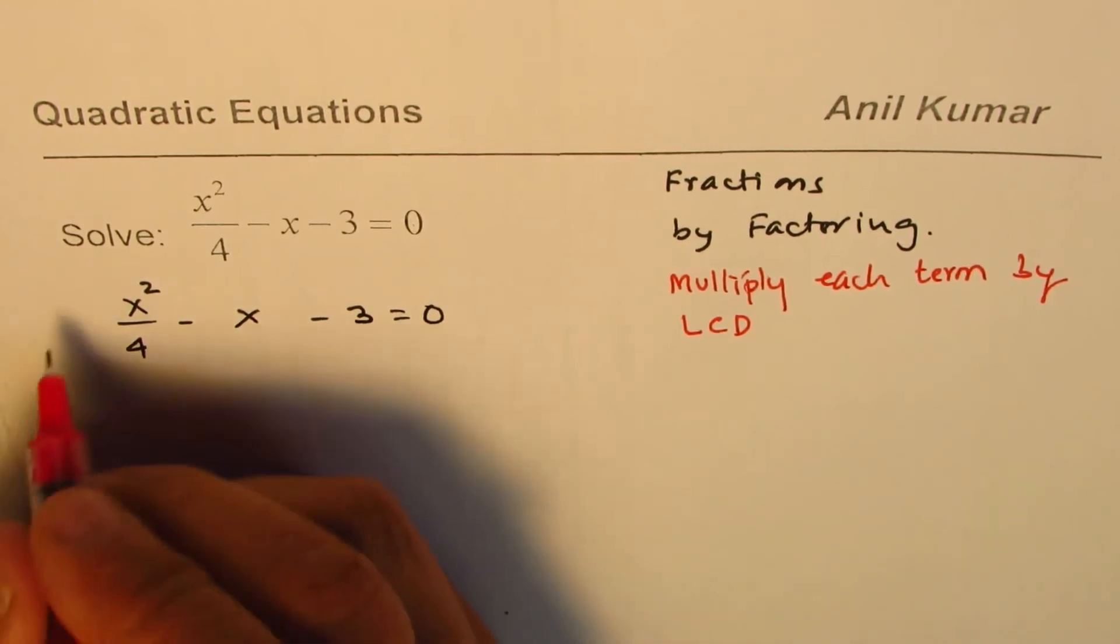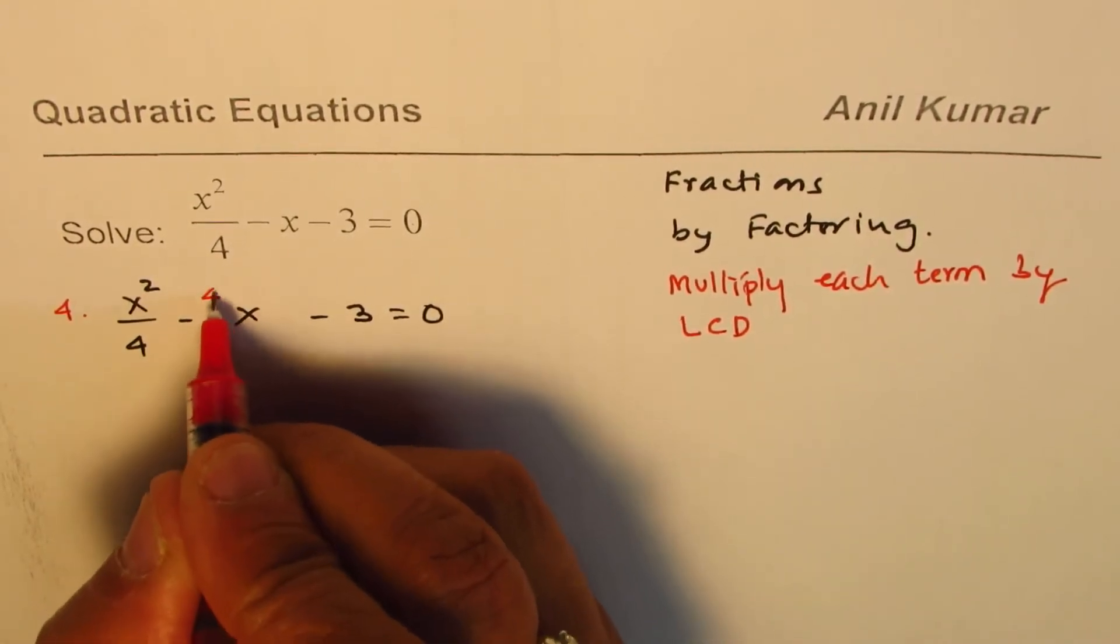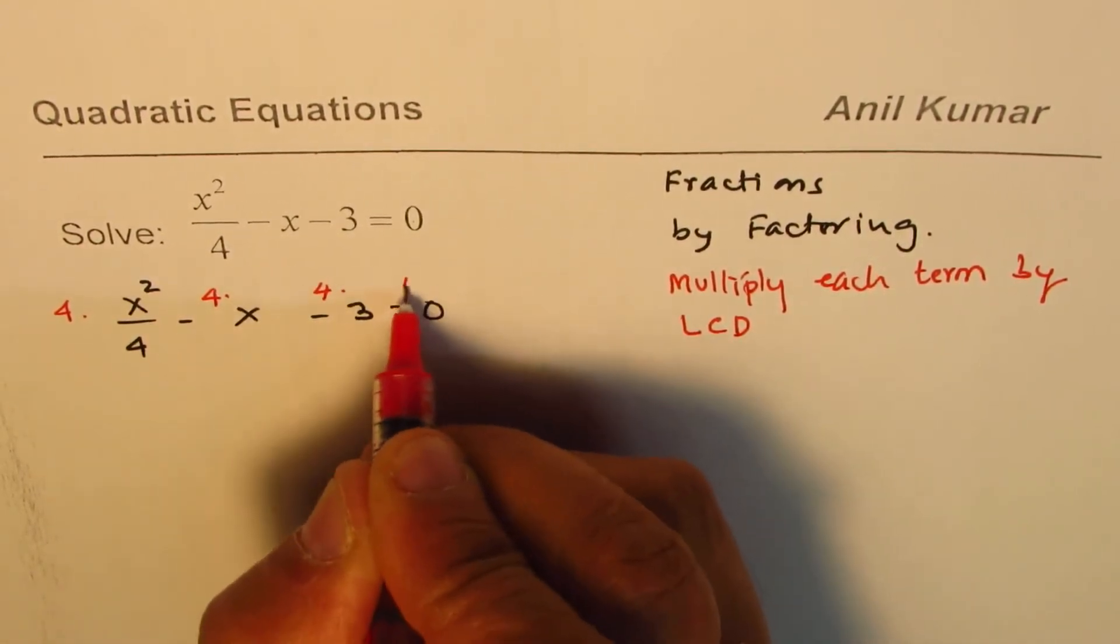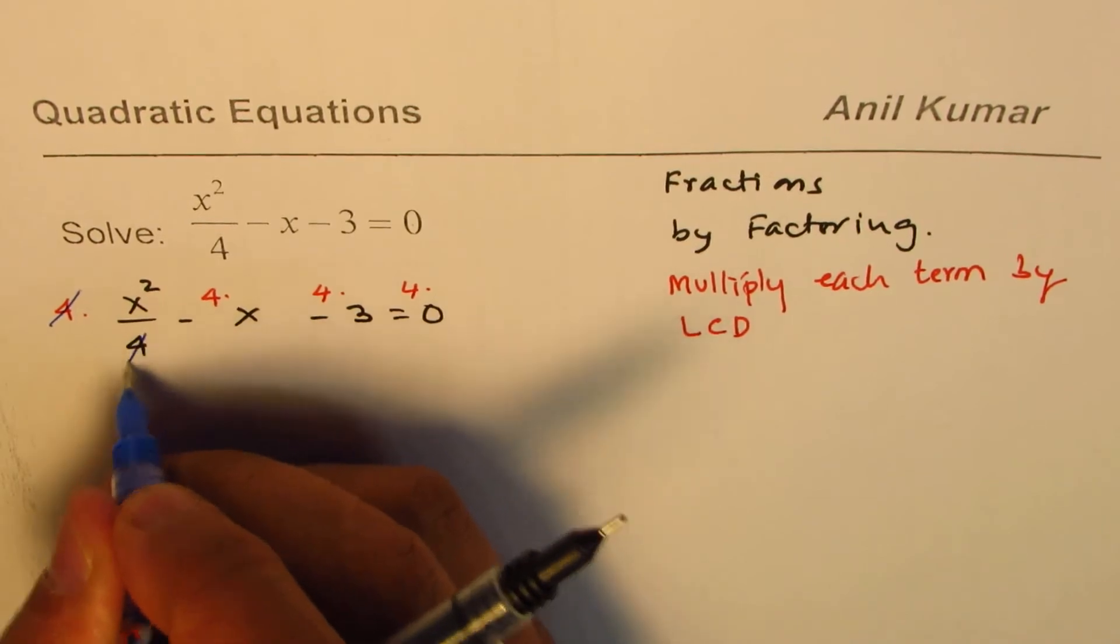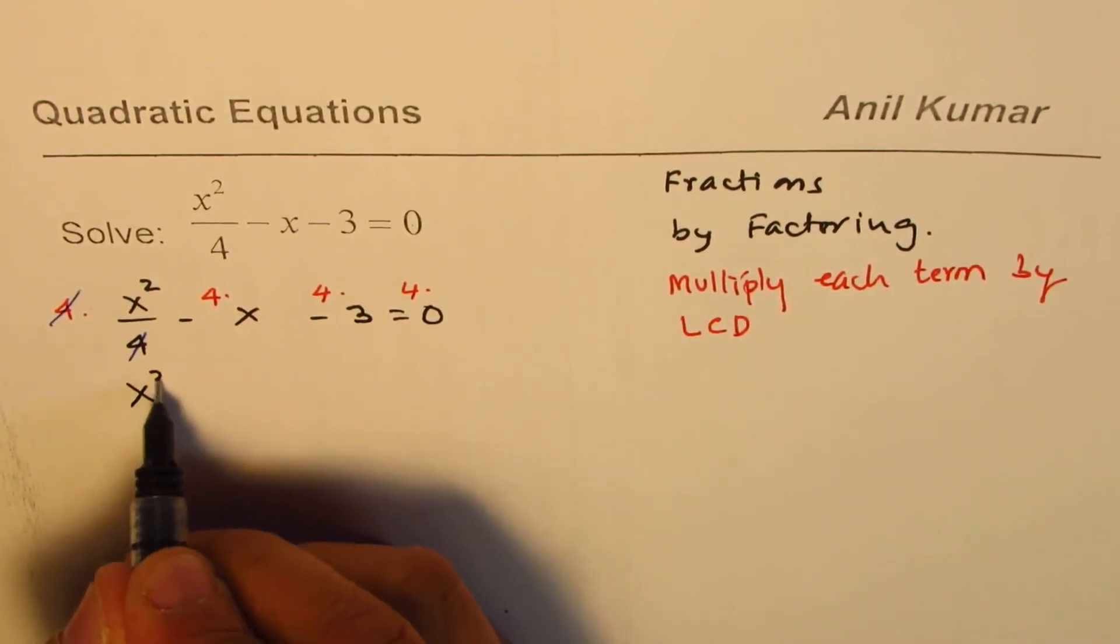So if I multiply each term by 4 what do I get? Both sides correct. So here 4 and 4 cancels correct. So you're left with x squared so the denominator is gone.